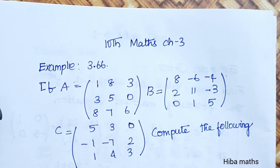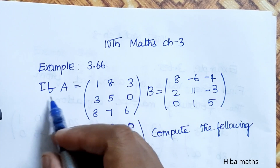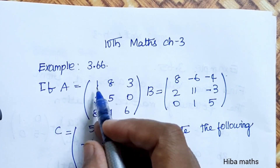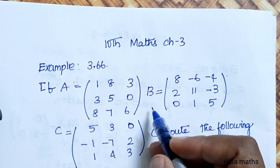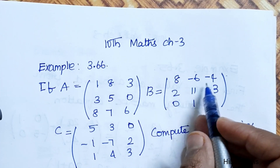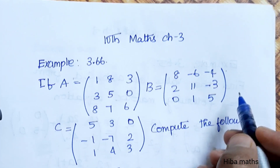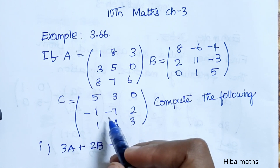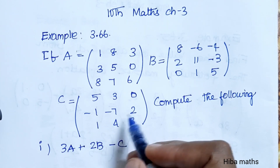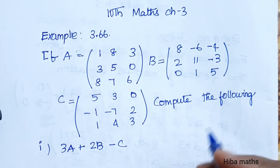Hello students, welcome to Hibamax 10 Standard Max Chapter 3 Example 3.66. If A is equal to 1 8 3 3 5 0 8 7 6, B is equal to 8 -6 -4, 2 11 -3, 0 1 5, C is equal to 5 3 0 -1 -7, 2 1 4 3. Compute the following.